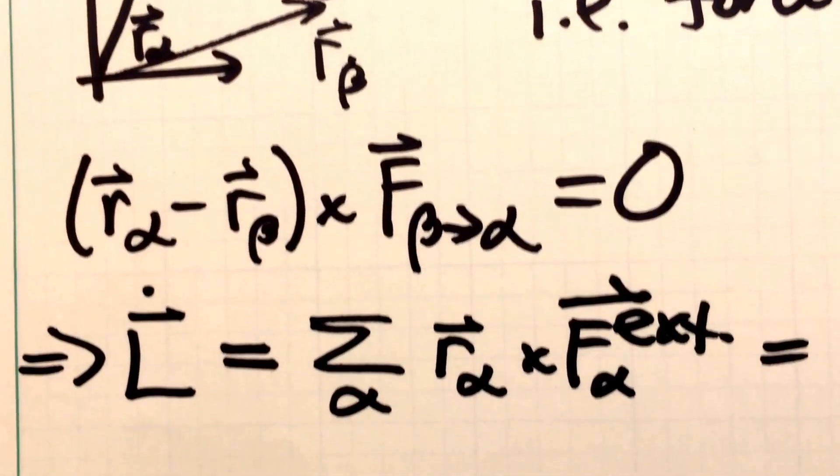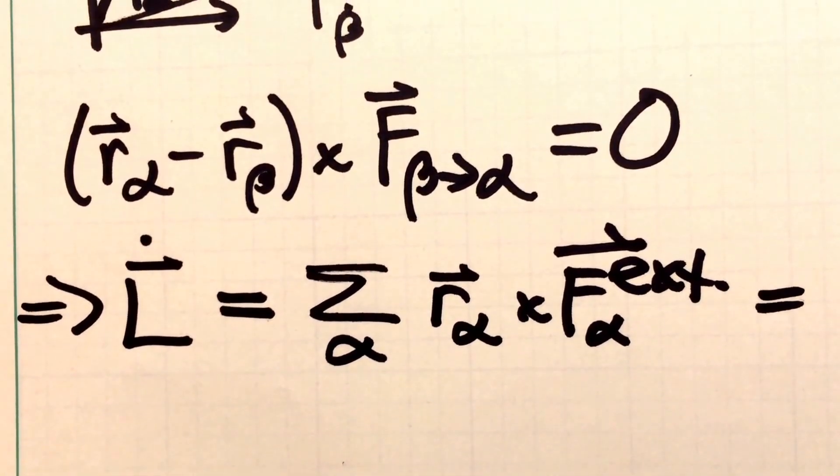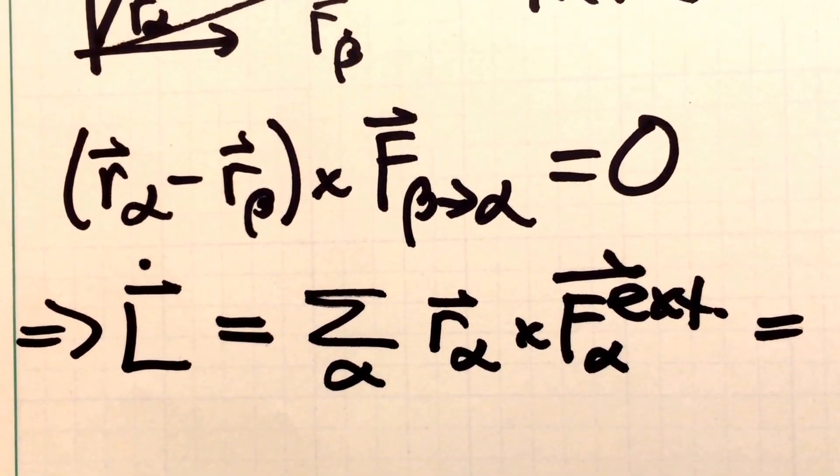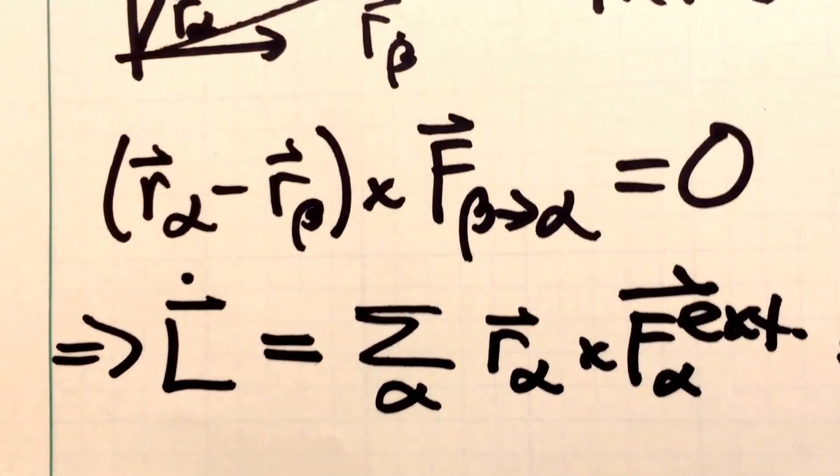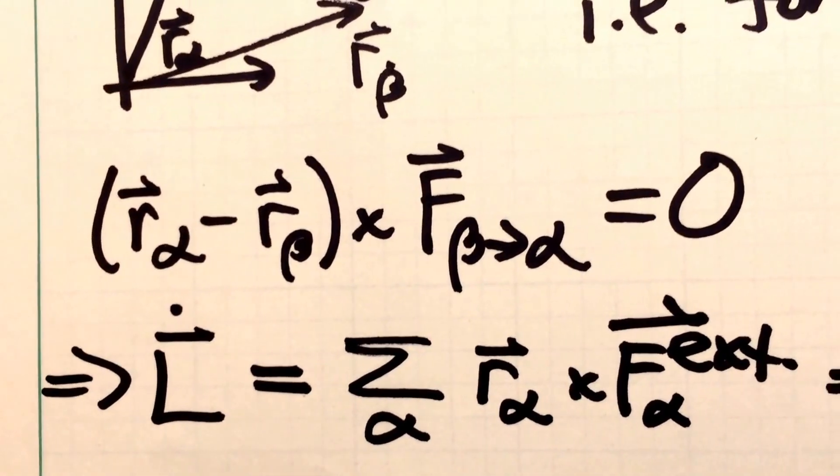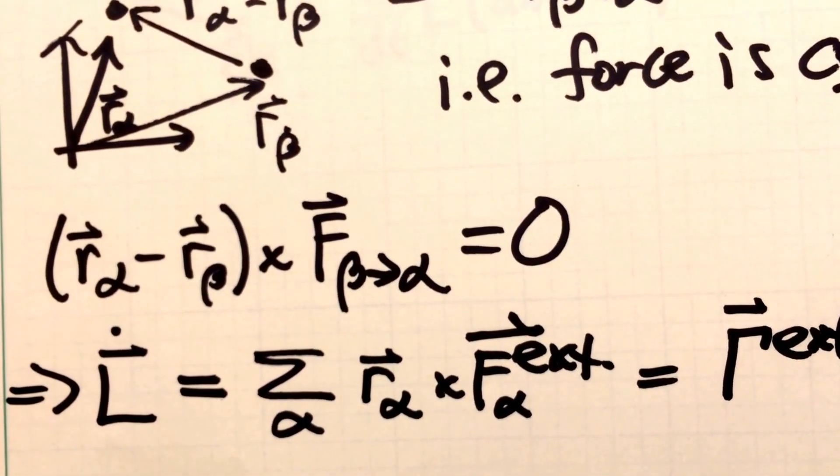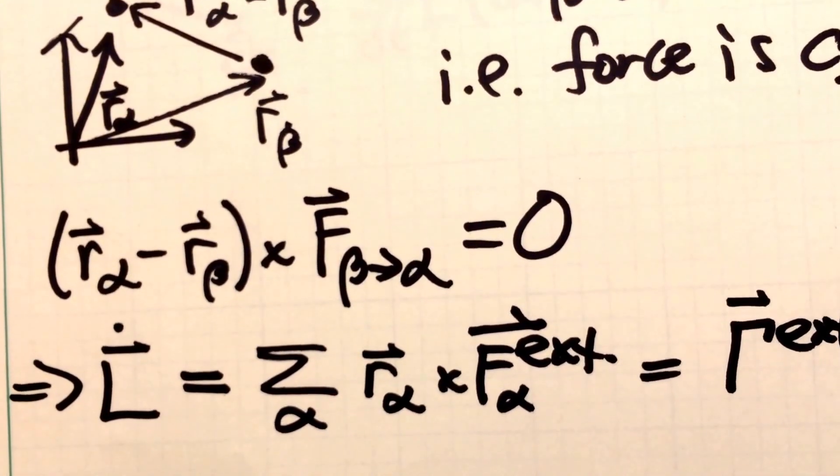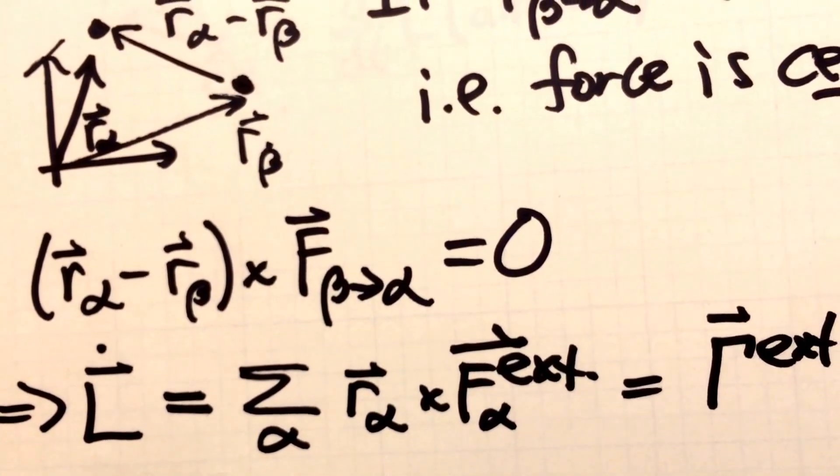And so the upshot of this is that the change in the system's angular momentum vector is just the change due to external forces. Very similar to what we had when we were looking at linear momentum and its conservation. And so we can write that sum of r alpha crossed into the external forces vectors. That's just the external torques acting on the system.